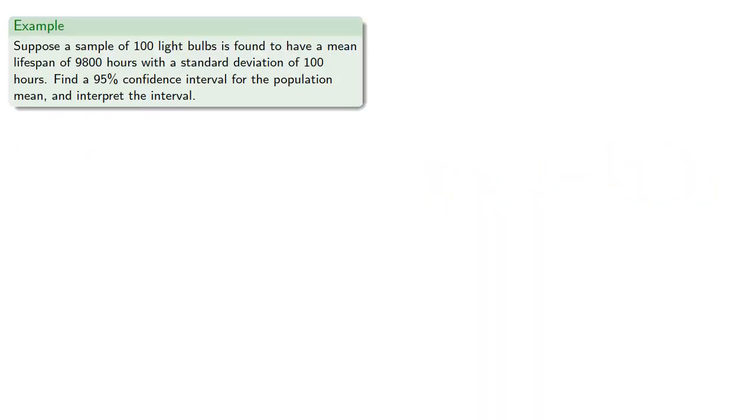How does that work? Well, let's go back to our light bulbs. So here we find a sample of 100 light bulbs to have a mean lifespan of 9,800 hours and a standard deviation of 100 hours. We want to find a 95% confidence interval for the population mean and interpret the interval.